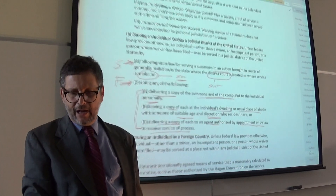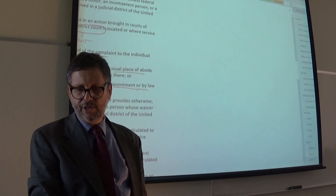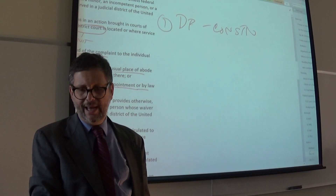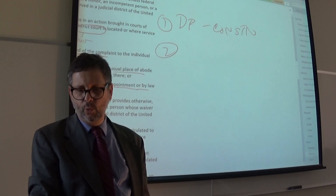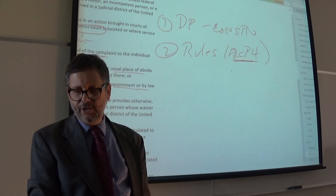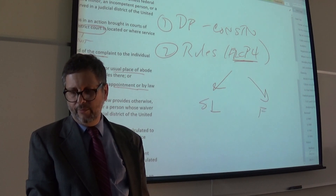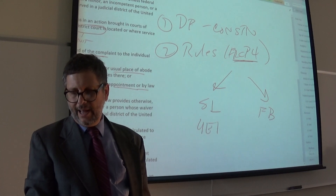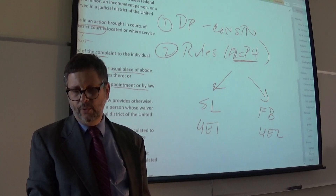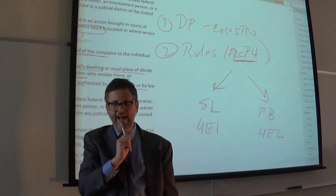If you have a fact pattern involving the service of the summons and complaint, keep in mind a couple things. First, you've got to satisfy due process — that's the Constitution, that's Mullane. And second, you've got to satisfy the rules of service. If you're in federal court, it's going to be FRCP Rule 4 for the initial summons and complaint, which in turn allows you to look to state law and federal bases — that's 4E1 and 4E2. Make sure that you go through all these steps of the analysis.